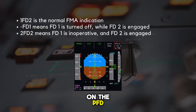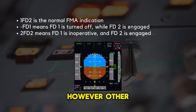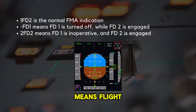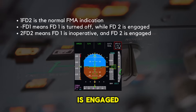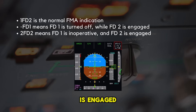On the PFD, '1FD2' is the normal FMA indication with both flight directors engaged. Other modes may be encountered: 'dash FD1' means flight director 1 is turned off while flight director 2 is engaged; '2FD2' means flight director 1 is inoperative and flight director 2 is engaged.